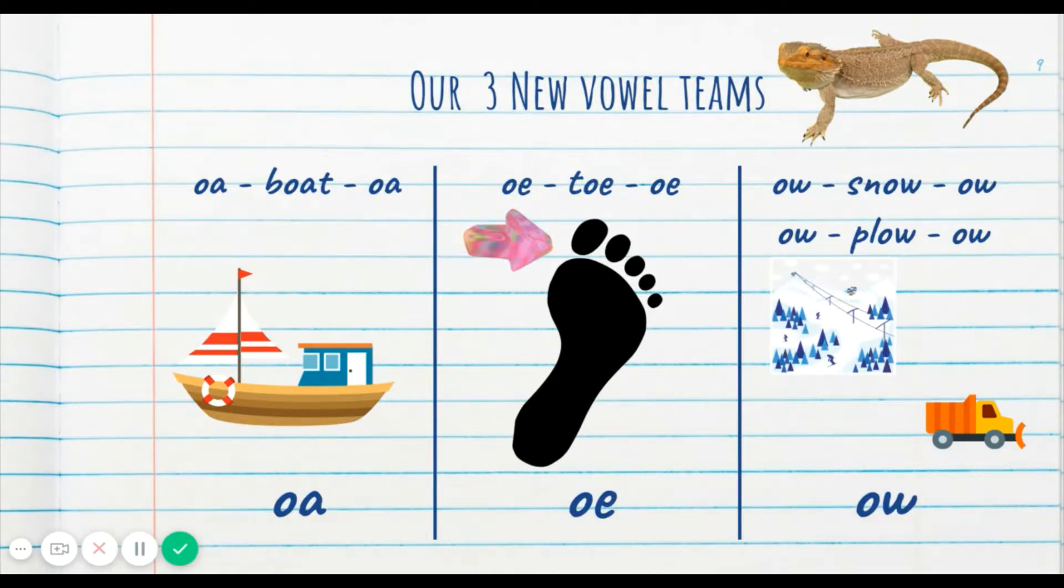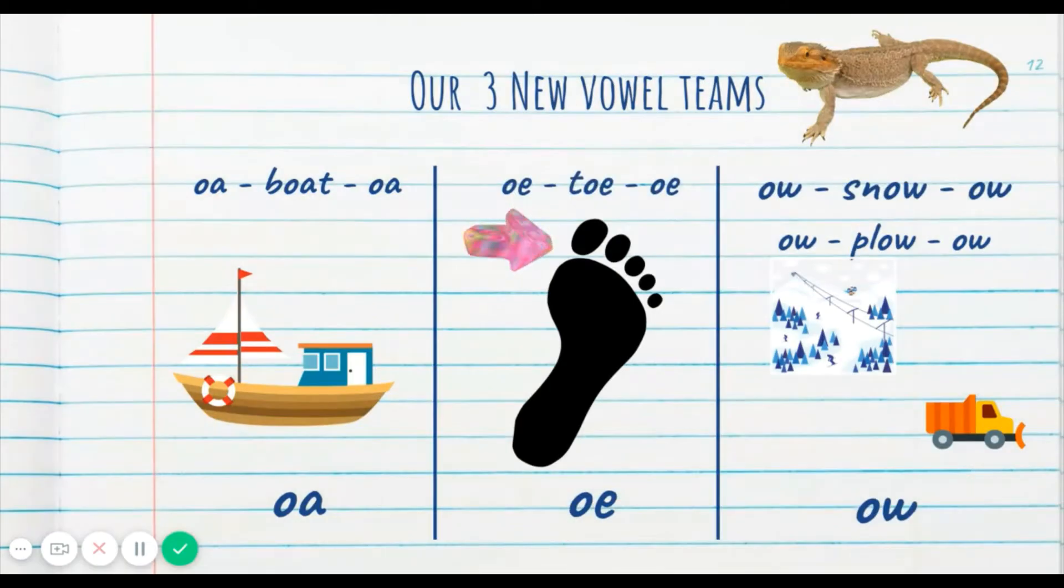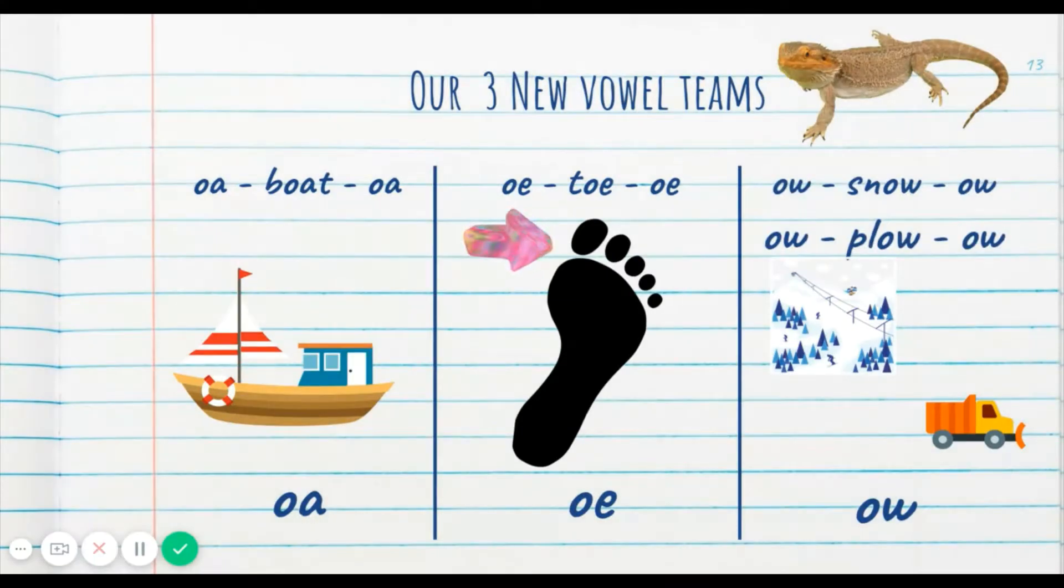So again, we're going to practice with these. And if you need some more practice, just rewind the video. No sweat. Here we go. O-A boat, O, go. O-E toe, O, go. Good. O-W snow, O, go. O-W plow, ow, go. Not bad. Give yourself a round of applause. Those are some tricky vowel teams. But whenever you see O-A or O-E or O-W, just know that those two letters make the O sound or in plow's case the ow sound. Not bad. We're moving on.